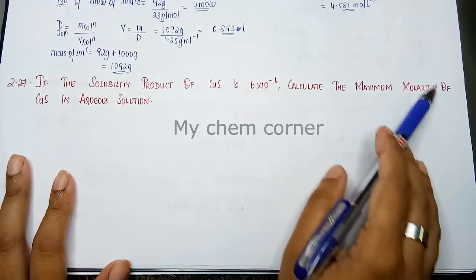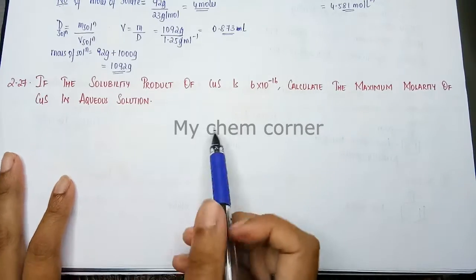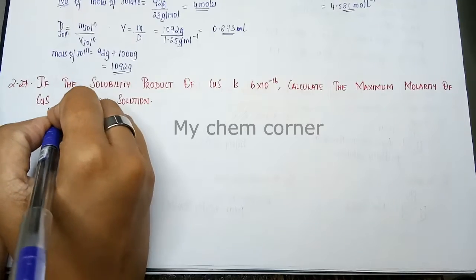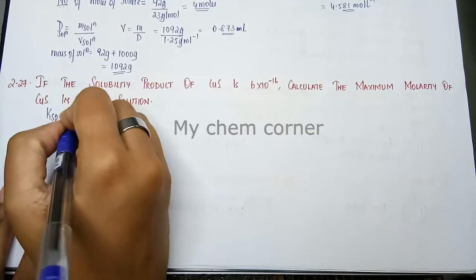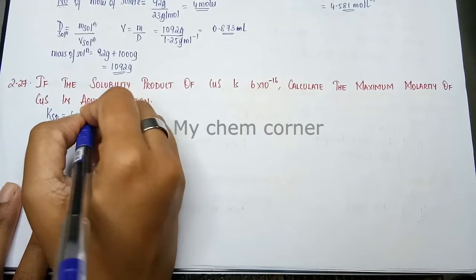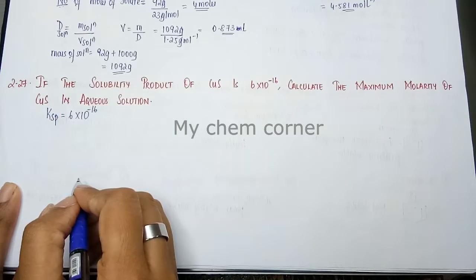When I am talking about maximum molarity, I am talking about solubility only. So here the solubility product constant, KSP, is equal to 6 into 10 to the power minus 16.